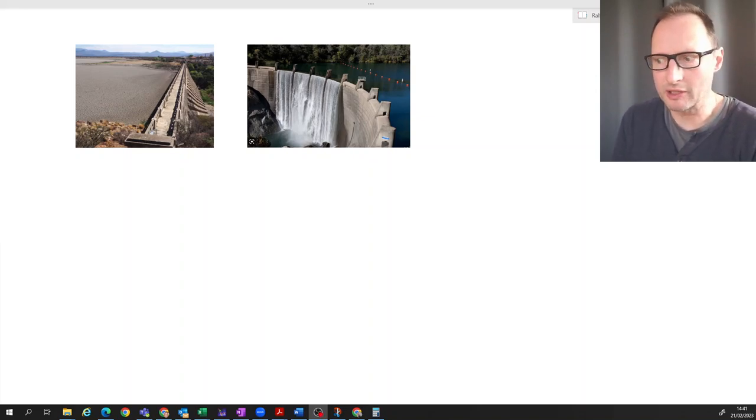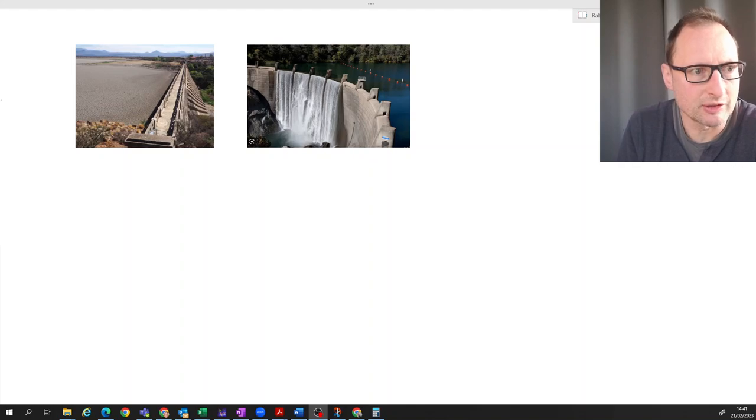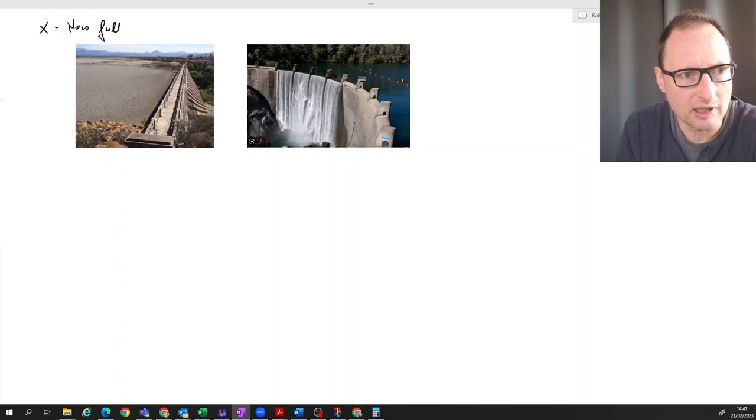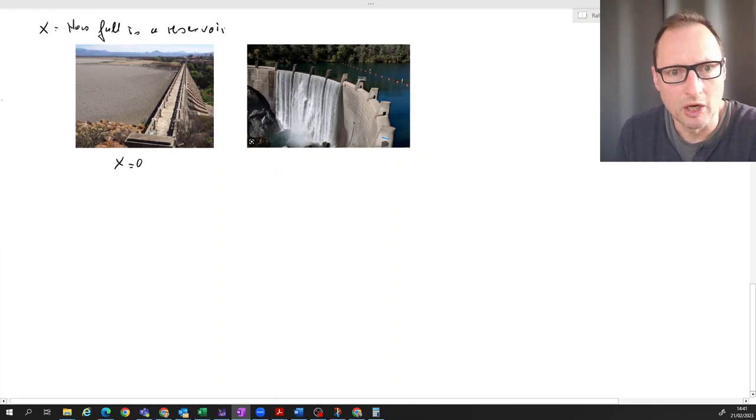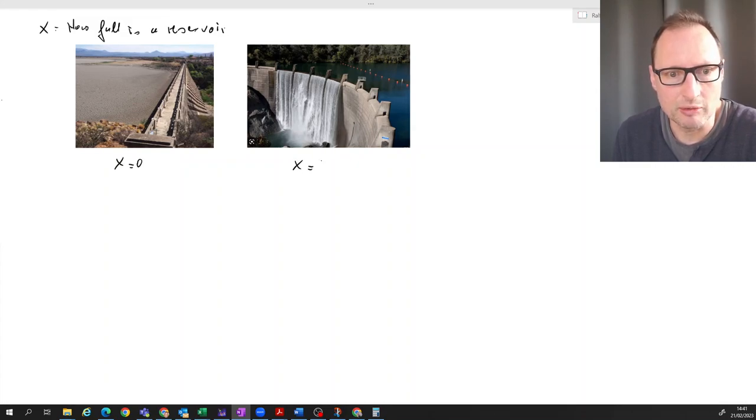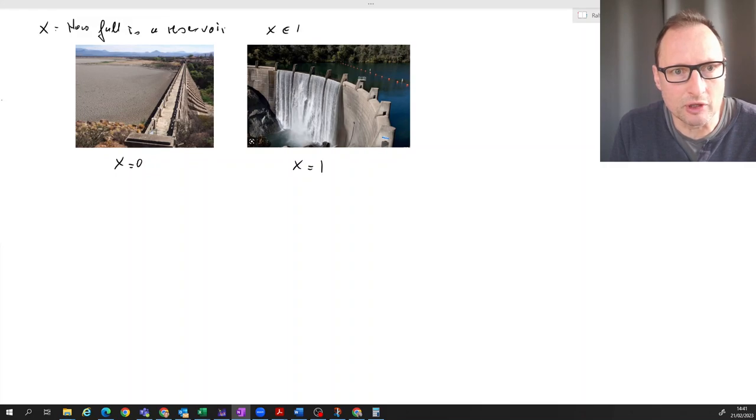So let's say we have a random variable called X, which tells us how full a reservoir is. There are two extreme cases: either it is totally empty, like this one here where X would be zero, or it is totally full where the water is overflowing, where that random variable has a value of one. So X is basically an element of the interval [0,1], including zero and one.